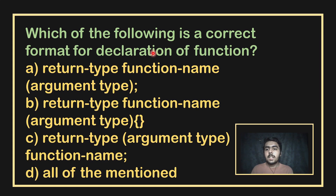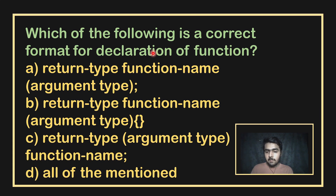Which of the following is the correct format for declaration of a function? First write the return type, then the function name, followed by the argument types, and finally a semicolon. This option is correct.